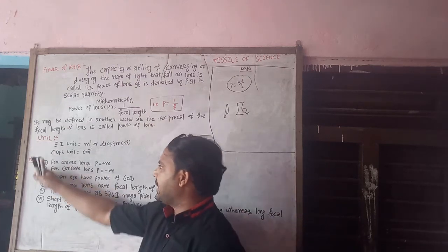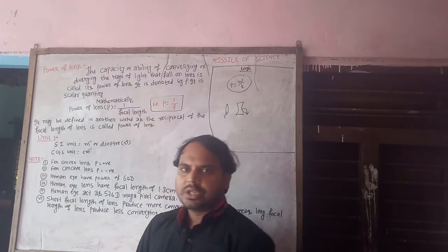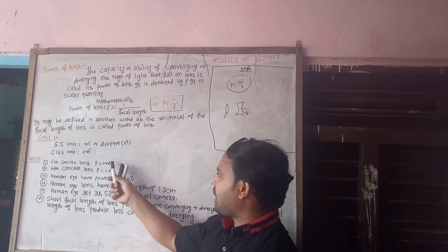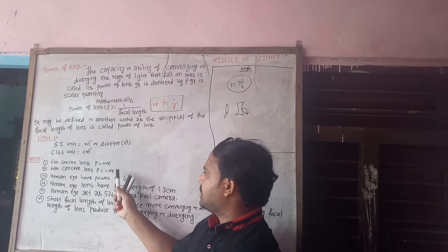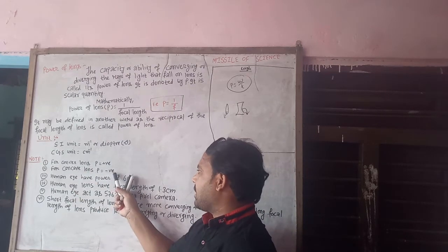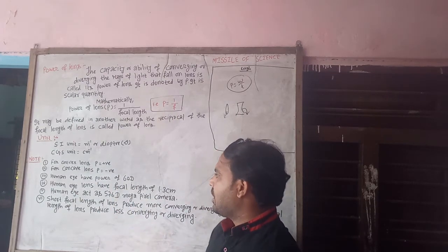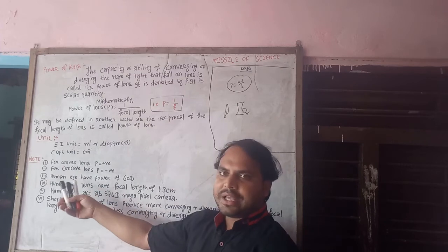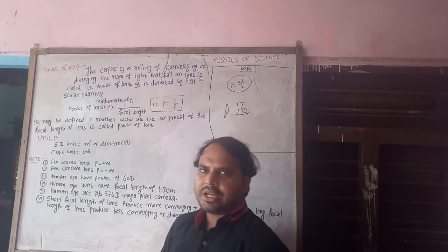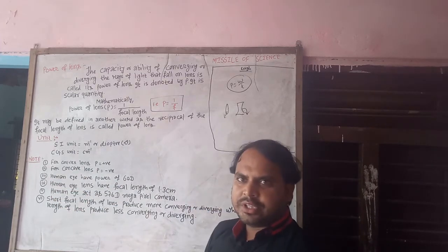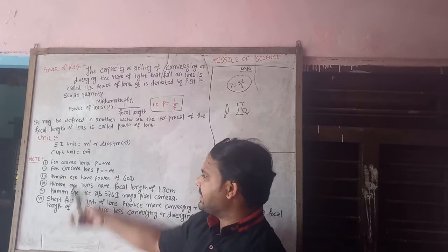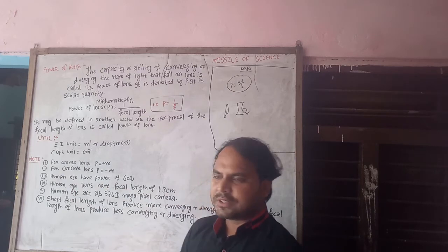For a convex lens — a converging lens — the power is positive. For a concave lens — a diverging lens — the power is negative. This is an important factor to remember about the power of lenses.